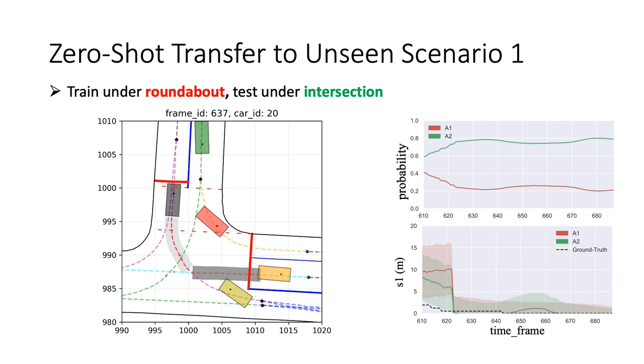However, in fact, we are more interested in the zero-shot transferability of our predictor. Therefore, we train the predictor on the roundabout, but test it under intersection. And here are some of the test results.